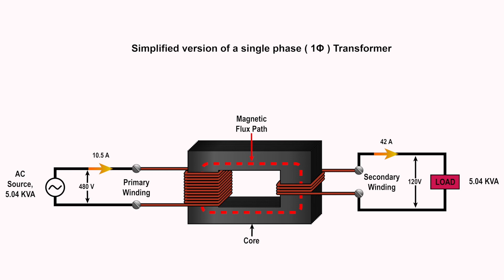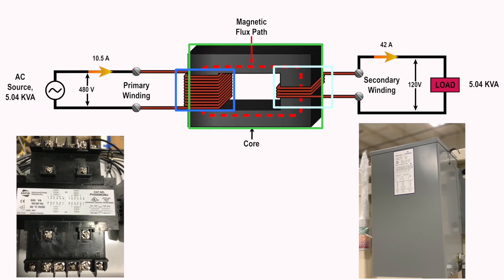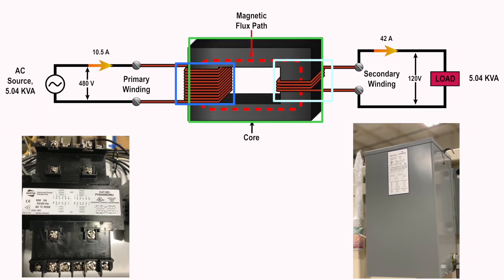For simplicity, a transformer in its most basic form is made up of a core, primary winding, secondary winding, and enclosure. The core provides a path for the magnetic lines of force. The primary winding receives energy from the source. The secondary winding receives energy from the primary winding and then delivers it to the load. And the enclosure protects the components from dirt, moisture, and mechanical damage.